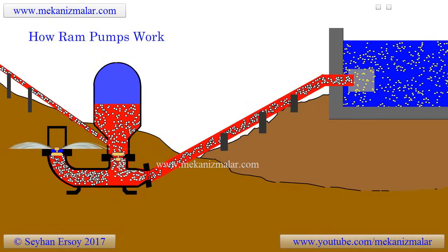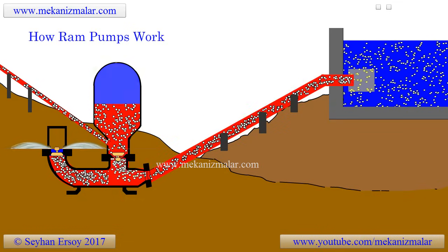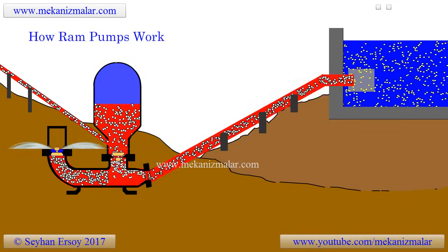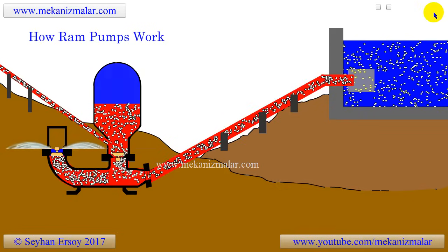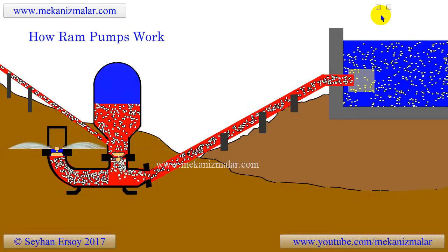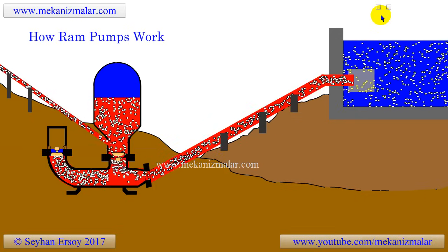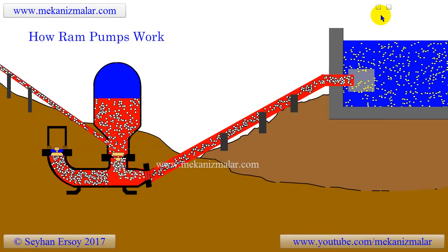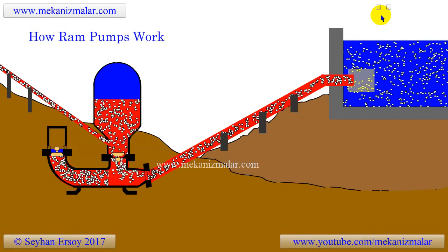Welcome to the video tutorials of mechanisms by Mechanismalar. A ram pump is an interesting device for pumping water to high elevation without using any external power supply. The catch is the location. If you live somewhere near a creek where water is flowing downhill, then you're in luck — this is the prime location for operating a ram pump.